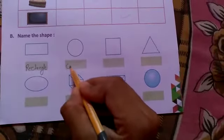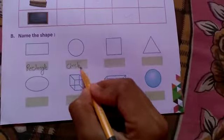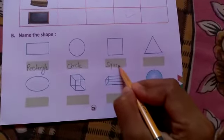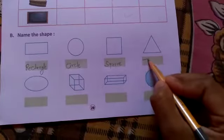Second is circle. Third is square. And fourth is triangle.